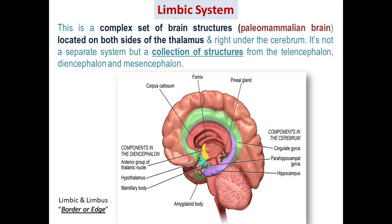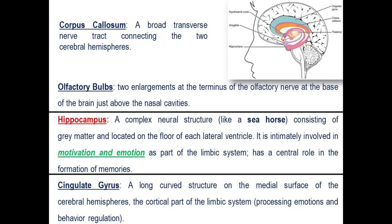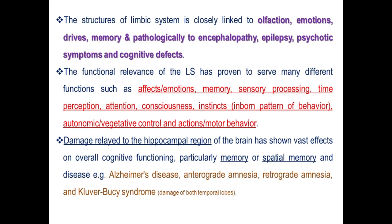The limbic system — as the name suggests — is a complex set of brain structures, also called the paleomammalian brain. It is located on both sides of the thalamus and includes structures like the fornix, columns of fornix, mammillary bodies, and others — around 10 different organs make this total limbic system. The most important component is the hippocampus, which has a complex neural structure like a seahorse. There are two amygdalae in the brain, one in each hemisphere. If the amygdalae are absent, a person feels no fear and may engage in extraordinary or dangerous behaviors — this happens in a few rare human cases.